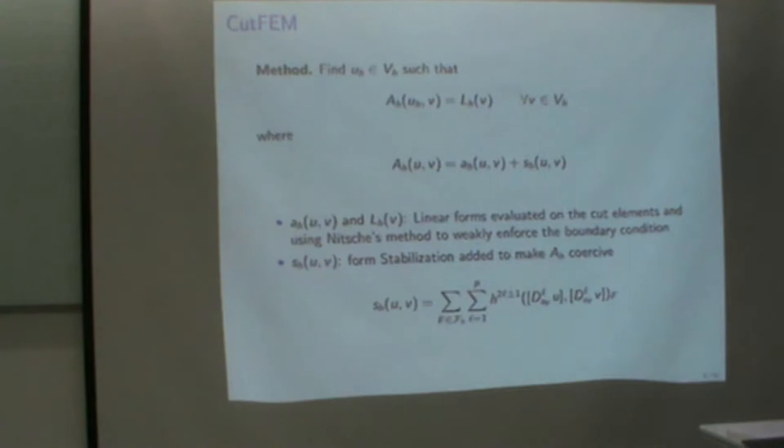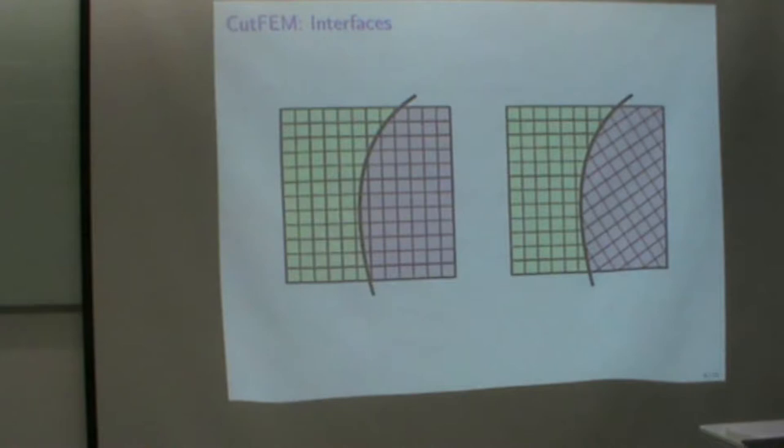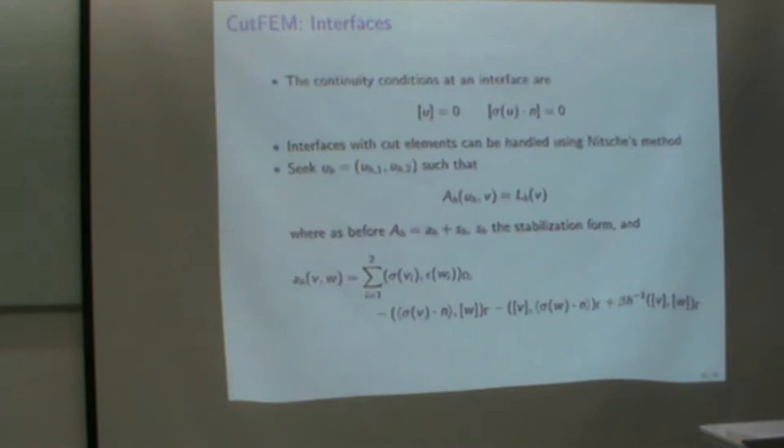We also do the same thing on an interface. And then it could either be this situation, which Peter had in his talk here, that we basically have an interface that cuts through a background mesh, but it could also be this situation where we have two completely different meshes on the left and right hand side, which I think we saw, for instance, yesterday in the channel computation. And then we would use Nitsche interface conditions here, and we would stabilize. And then the stabilization comes in from the left and from the right on both meshes.